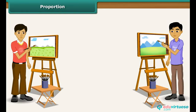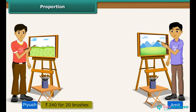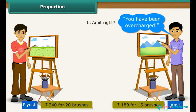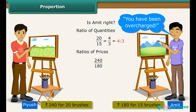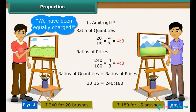Proportion. Pyush and Amit are excellent painters. Pyush bought 20 paint brushes for Rs. 240, and Amit bought 15 identical brushes for Rs. 180 from the same shop. Amit claims the shopkeeper overcharged Pyush. The ratio of quantities is 4 is to 3, and the ratio of prices is also 4 is to 3. Since the ratios are equal, Amit's claim is wrong — the shopkeeper charged both the same price per brush.